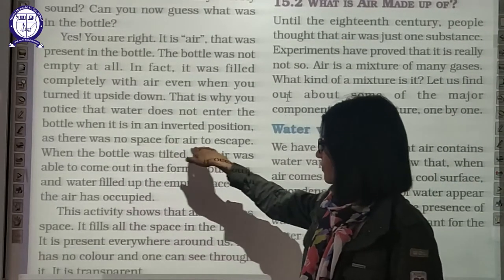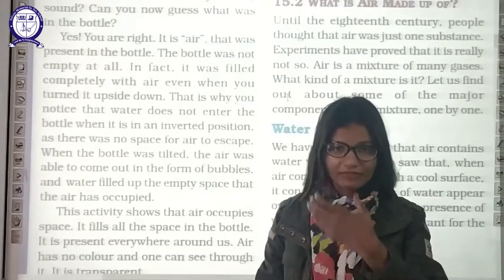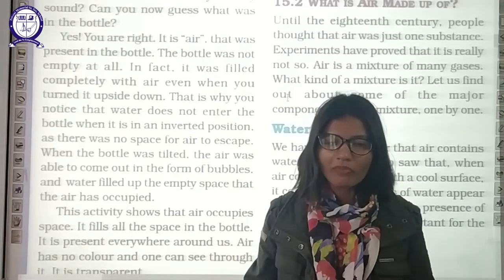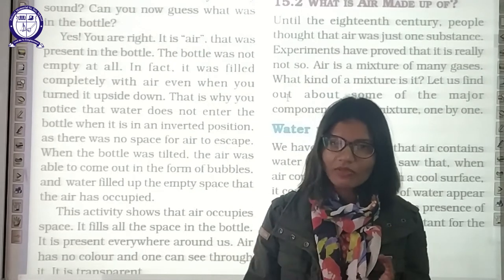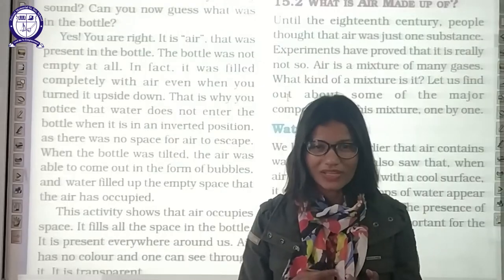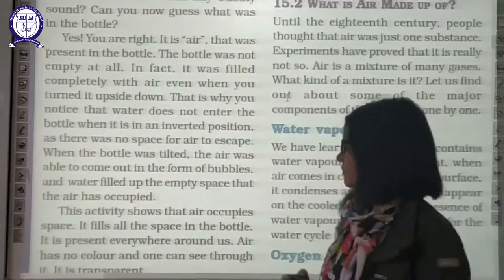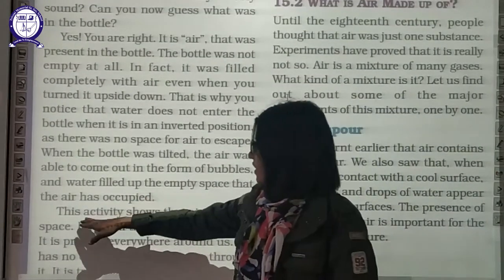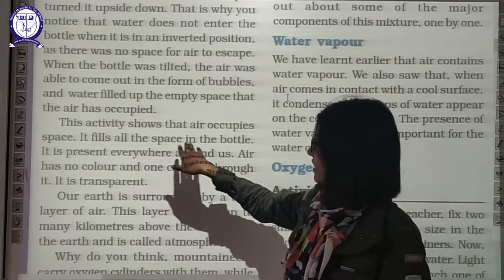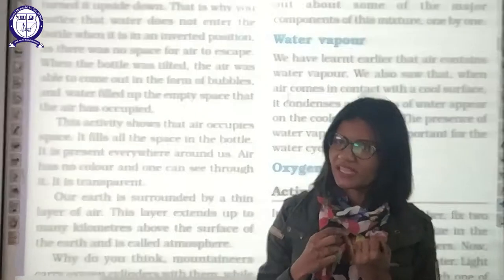As there was no space for air to escape when the bottle was inverted, there was no way for the air to move out. But when you tilt the bottle, air comes out and water replaces it — that is why air escaped as bubbles. This activity shows that air occupies space. It fills all the space in containers. It is present everywhere. First property: air is present everywhere. Second property: it occupies space.